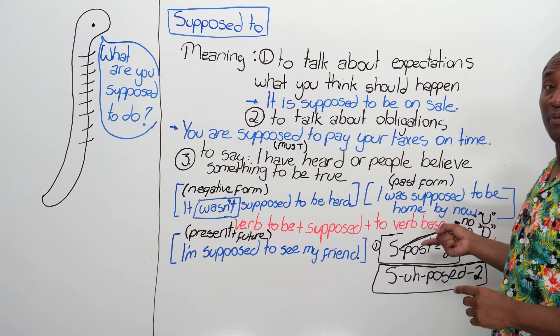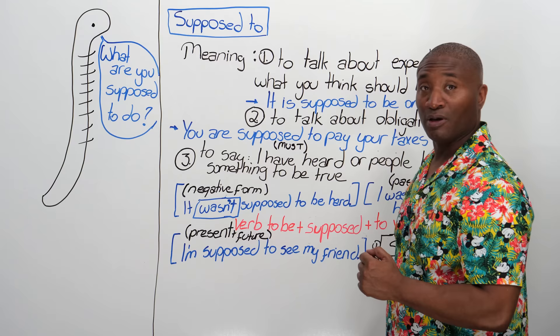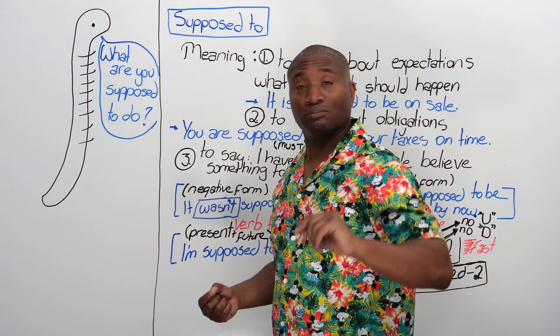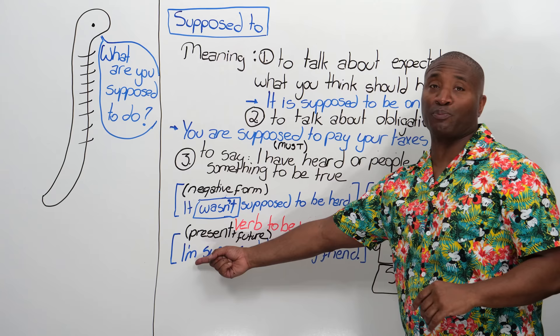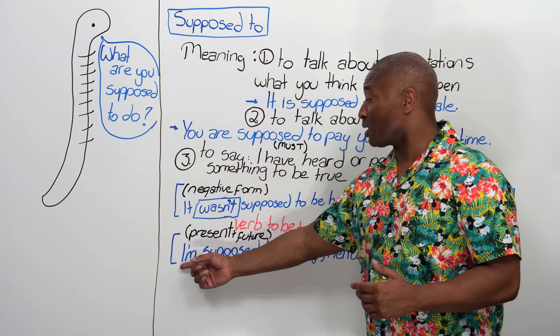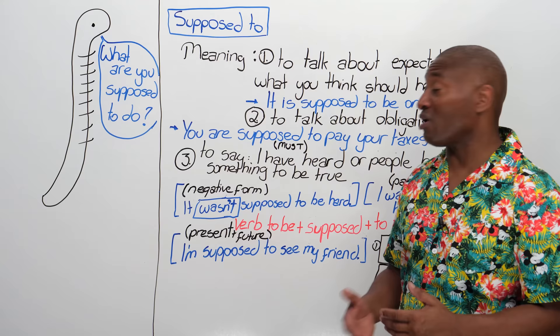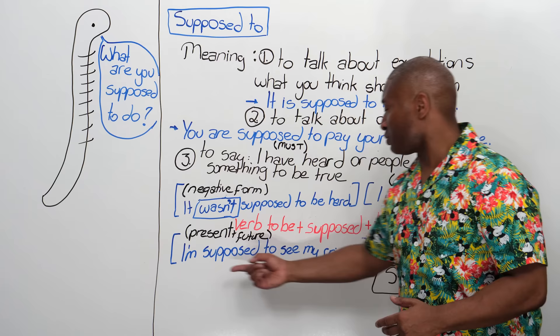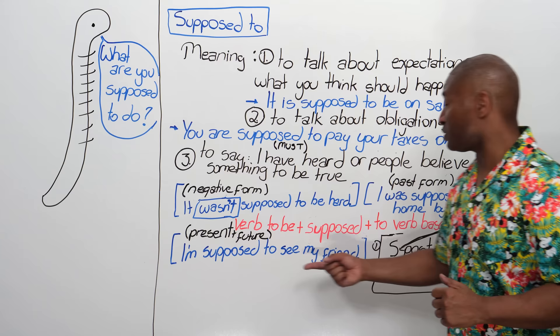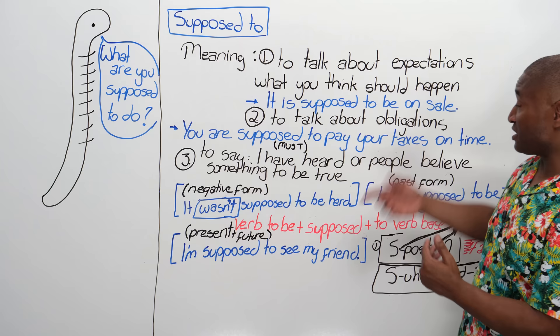I'm supposed to meet my friend for dinner. You were supposed to be here an hour ago. You're supposed to go home. That is the form. When we say it in the present or future, we use the verb to be in its appropriate form for the pronoun. If the pronoun is I, then it's am. He, she, it — it's is. They and we use are. So: we are supposed to see my friend; I am supposed to meet my friend; she is supposed to see her friend. For the future: I am supposed to see my friend tonight.